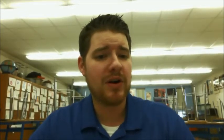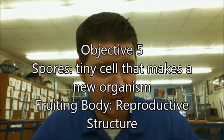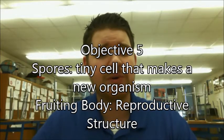Mushrooms reproduce through different methods. One method that makes them unique is spores — tiny little cells that make up new organisms. The actual mushroom part that you see, the part we typically eat on pizza or sautéed on steaks, is known as the fruiting body. This is just the reproductive structure of the mushroom itself. So that labeled diagram we looked at is actually a picture of what's called the fruiting body.